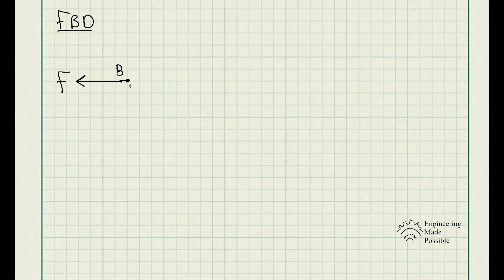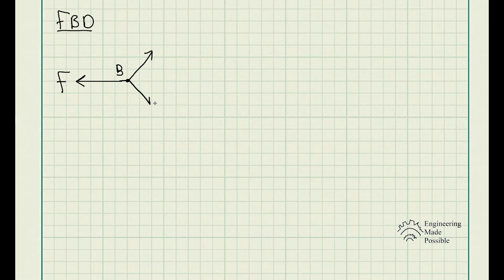Starting off at point B, we're going to be solving for the force applied. When it comes to the springs themselves, for every action there's an equal and opposite reaction. If you're pulling on the springs, they're basically going to be resisting that force — equal and opposite, in the opposite direction. So let's call the forces FBC and FBA.